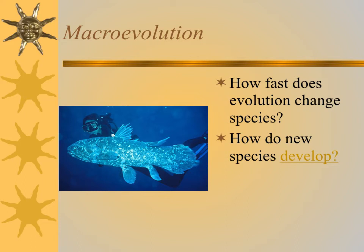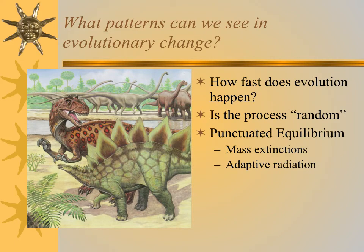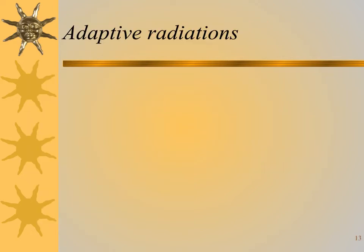How fast does evolution change species? There's a picture of a coelacanth — we have fossils almost 200 million years old that look a lot like living coelacanths. A lot of evolution we think is gradual, but sometimes it can happen pretty fast. In most cases evolution is gradual, but sometimes there are periods of rapid change, particularly following mass extinctions. This leads to formation of new species in a quick burst, called an adaptive radiation.